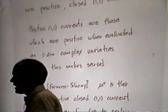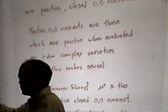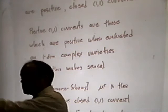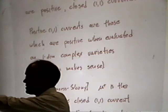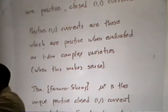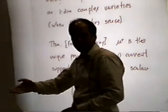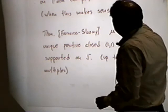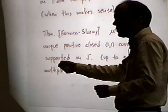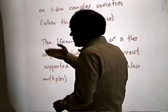A positive (1,1) current is a current which, when evaluated on a complex submanifold, gives a positive measure. For example, the fundamental class of a complex variety, if you evaluate it on a complex submanifold, gives the intersection number, and the intersection number of two complex varieties is always positive — that's an amazing fact about complex varieties. Positive closed currents — where closed just means D is zero in the sense of currents — here's the theorem of Fornes and Sibony.